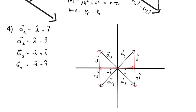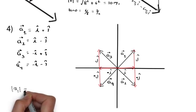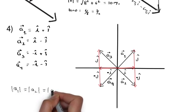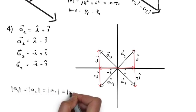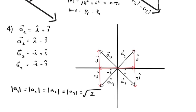These four vectors a1, a2, a3, and a4 are different vectors with different directions, but the magnitude in all cases is the same: √2 from the Pythagorean theorem. Thus |a1| = |a2| = |a3| = |a4| = √2. All four are vectors of equal magnitude but different directions.